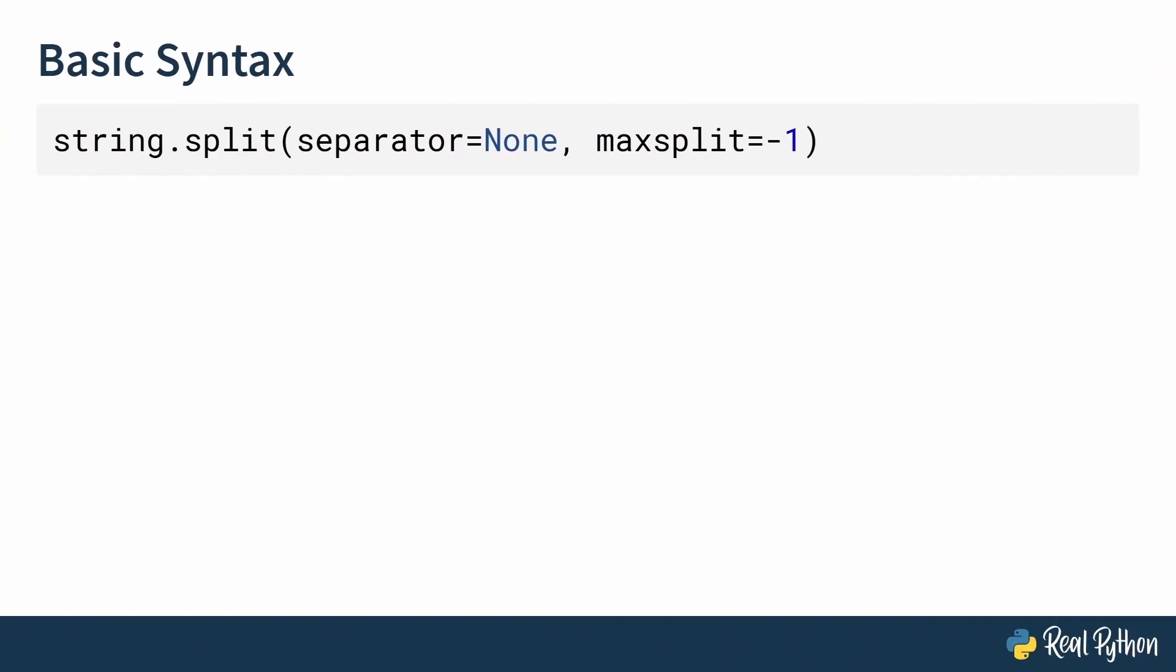You call the split method on a string object that you want to break apart. Let's understand the full syntax. First, there is simply the string you want to split. Then comes the method. The split method takes two arguments.